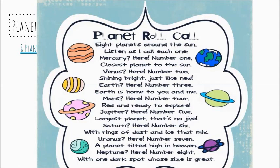All right, boys and girls, go ahead and join in with me for this one. Planet Roll Call. Eight planets around the sun. Listen as I call each one. Mercury through Neptune, each planet called with its distinguishing feature. Very good job, boys and girls.